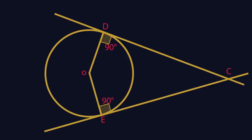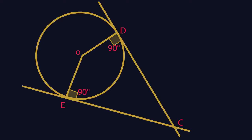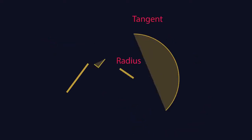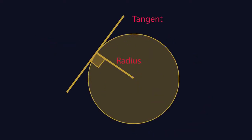What do you notice about the angle between the tangent and the radius? Remember that a tangent is a line that touches a circle at only one point. So that's theorem 5: the angle between a tangent and a radius is 90 degrees.